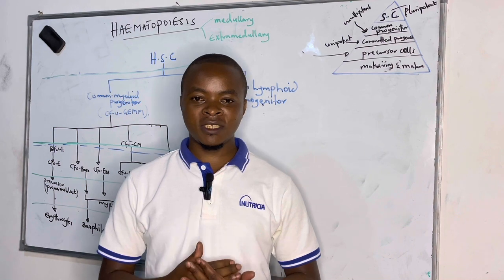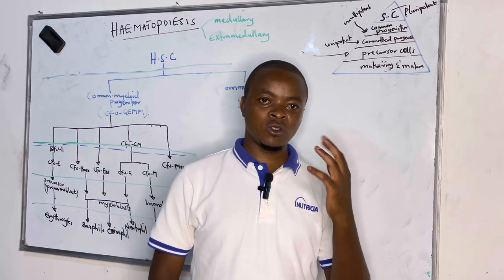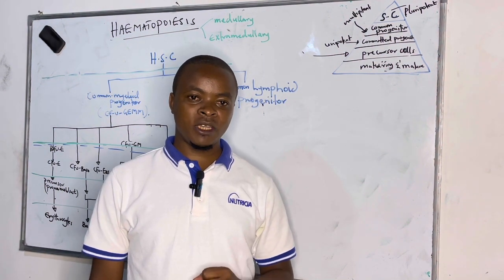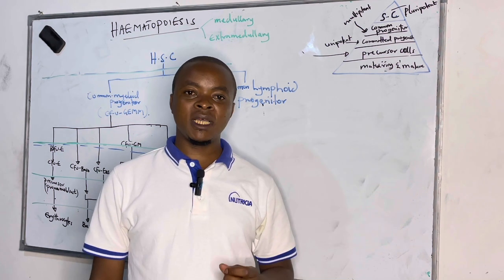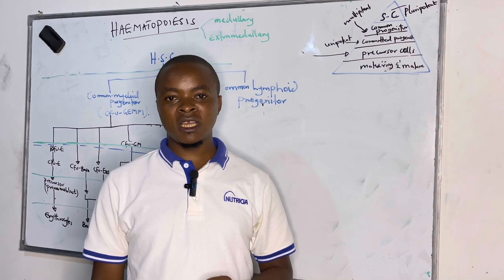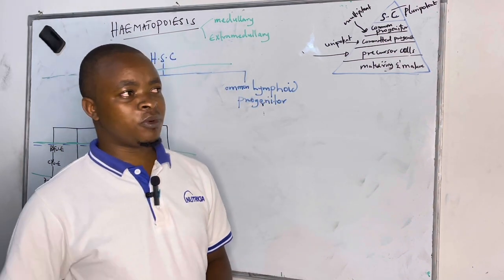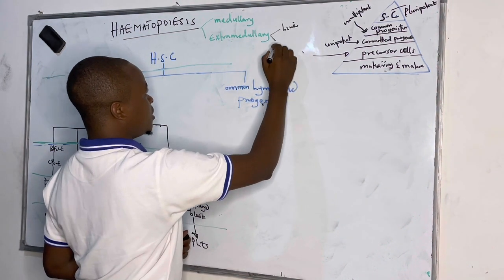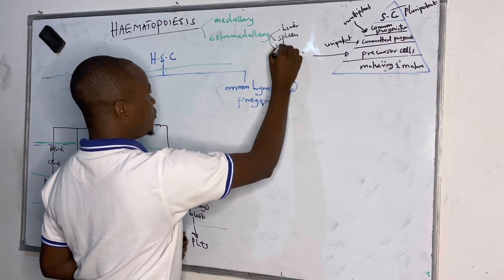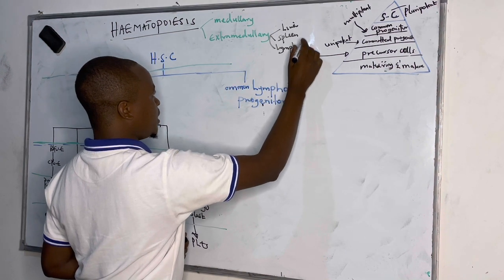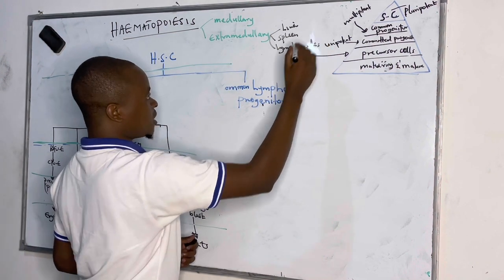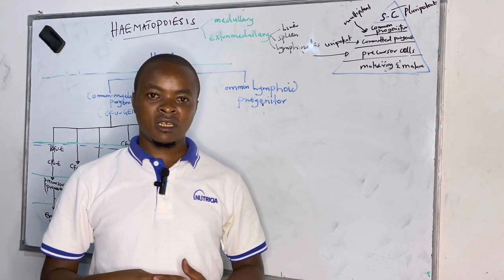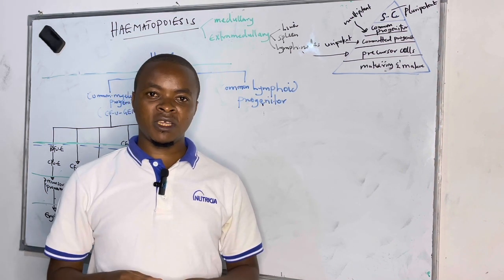We saw how it develops in the fetus — in fetal life — whereby we saw three stages: the mesoblastic stage, the hepatic stage, and the myeloid stage. We saw that the mesoblastic and hepatic stages are extramedullary hematopoiesis, meaning blood cell formation occurring outside the bone marrow — in the liver, the spleen, and the lymph nodes, which can be found in the thymus, intestine, GIT, and the mucosal lining of the respiratory tract.